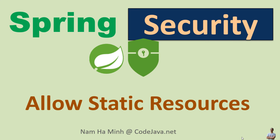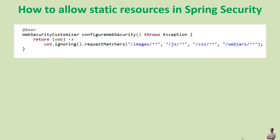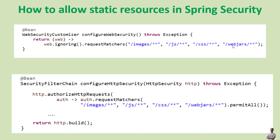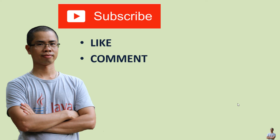So far you have seen how to allow static resources in Spring Security. There are two ways: the first way is to declare a bean of type WebSecurityCustomizer in your web security configuration class and specify the URL patterns that should be ignored by the Spring Security filter. The proper way is to configure request matcher mappings via the HTTP security object using authorizeHttpRequests, specifying the URL patterns with permitAll(). I hope you found this video helpful. Please subscribe to my channel, like, comment, and share this video. Thanks for watching.